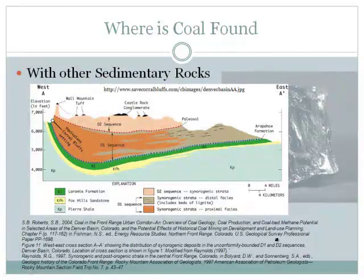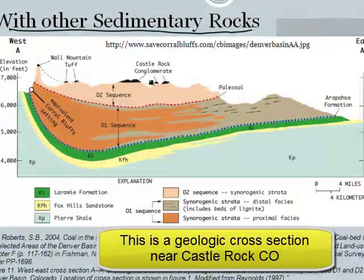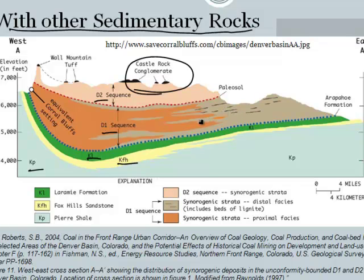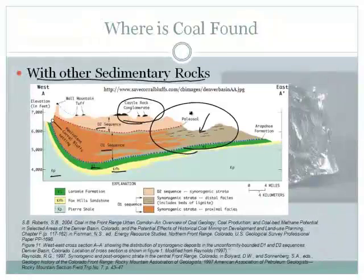Where do we find coal? You find it with other sedimentary rocks. Here is a cross-section near Castle Rock, Colorado showing the different geologic types of rocks underneath. Geologists look for certain kinds of rocks and use these cross-sections to identify areas where coal is likely to be found. If you look at this cross-section, you can see some blackish lines — those are areas where coal can be found. There is some coal here in the Rocky Mountains that we dig up.